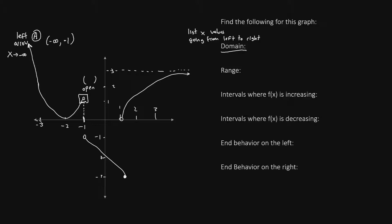Now let's move on to piece B, which is the middle piece. This piece begins where x equals negative 1, at this open circle, so we'll say negative 1 with a parenthesis. Now we follow that piece from left going toward the right, and the piece ends in a closed circle where x is equal to 1. We can see this by drawing a dotted line from the closed circle up to the x-axis. Because this is closed, we will put a square bracket on this right side.